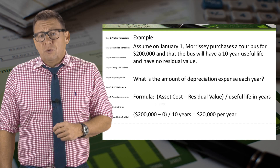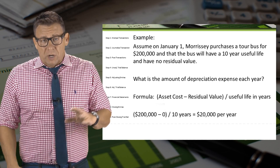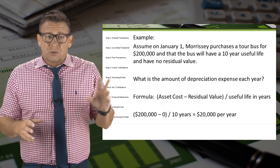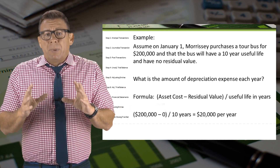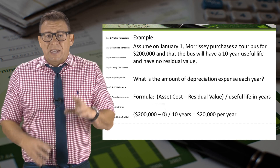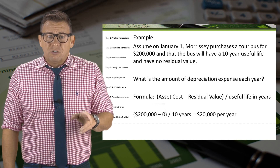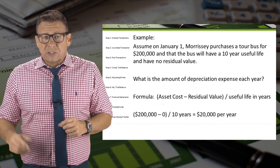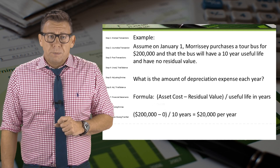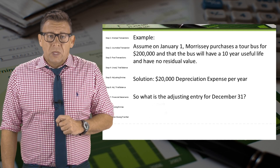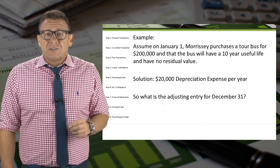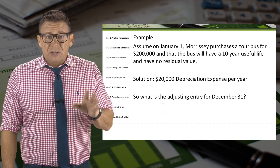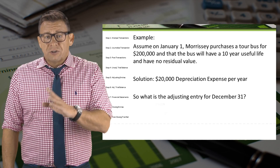In our example, assume that on January 1, Morrissey purchases a tour bus for $200,000, and the bus will have a 10-year useful life and no residual value. That works out to be $20,000 of depreciation expense each year for 10 years.